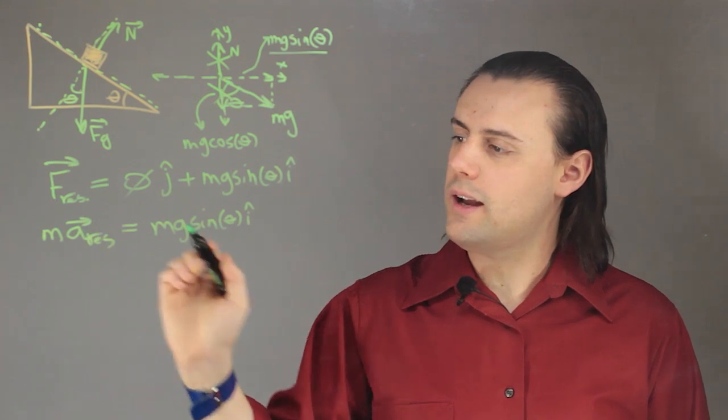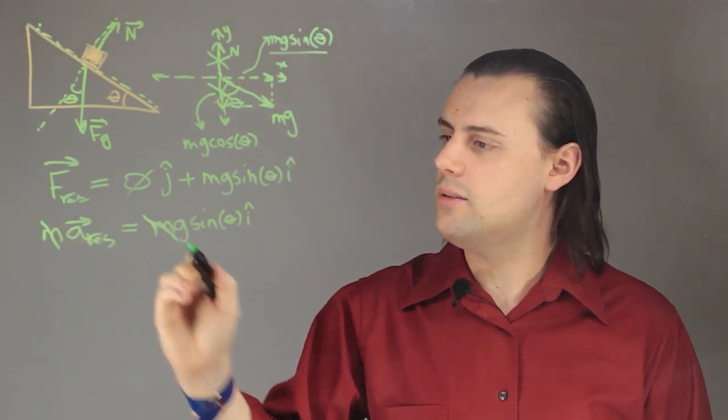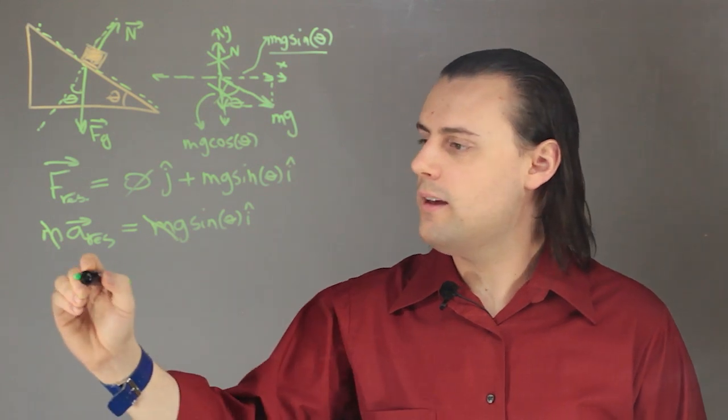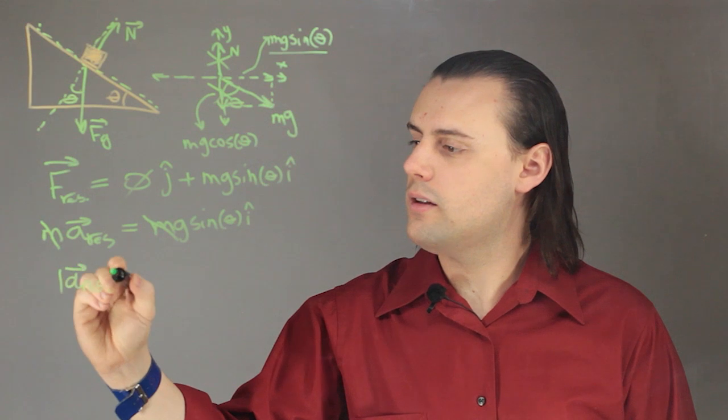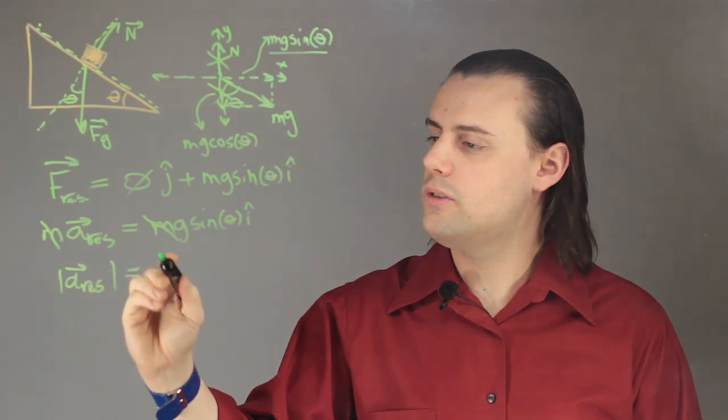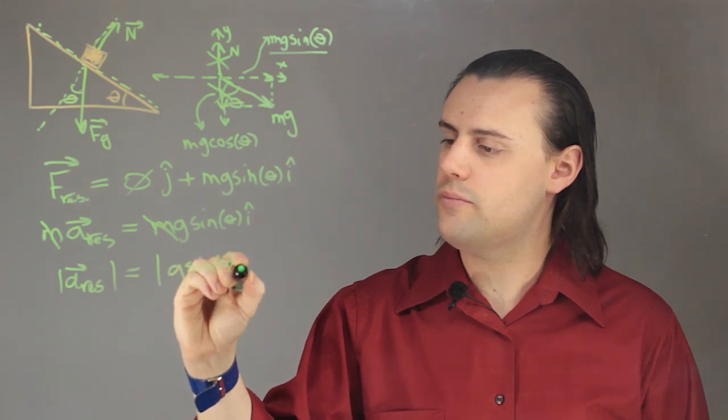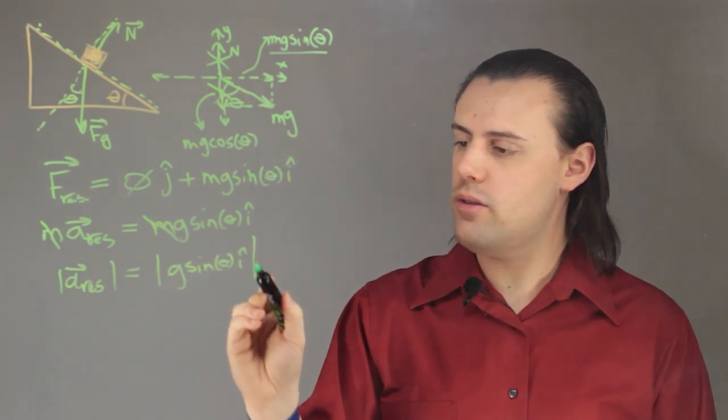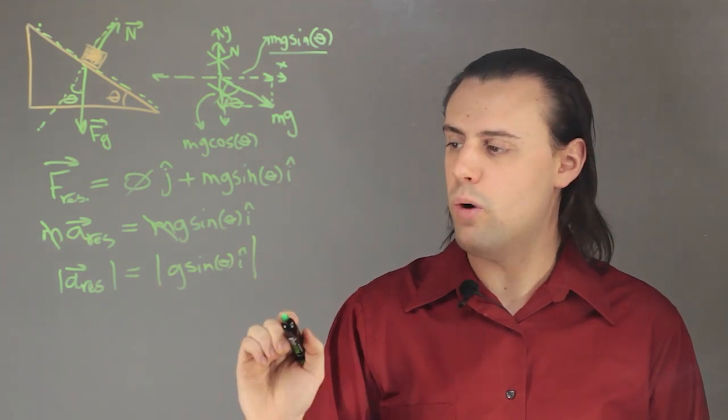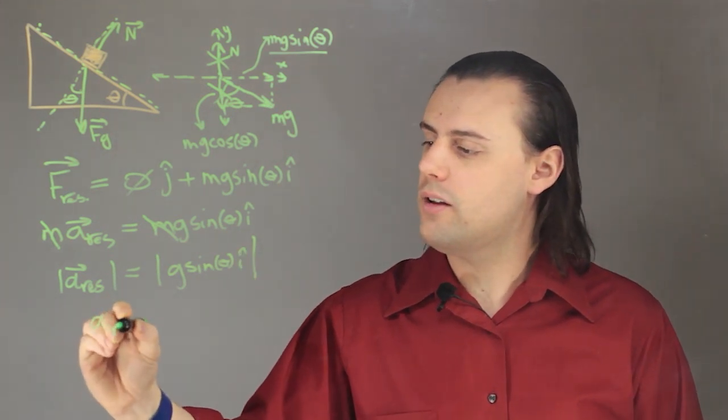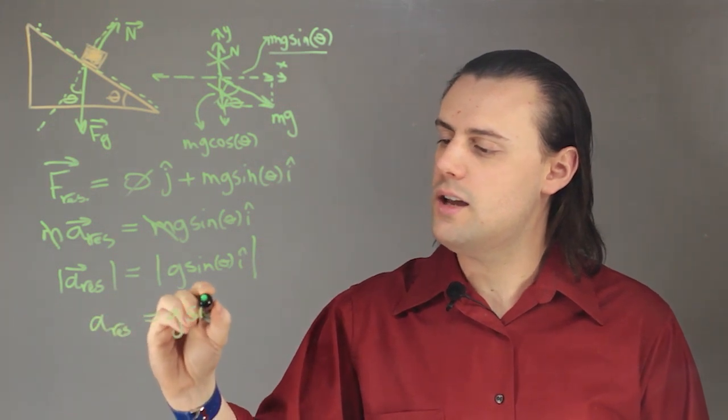And if I'm interested in the magnitude of this vector well first I can see that I can simply cancel out the masses. So the magnitude of the resultant vector is simply going to be equal to the magnitude of the right-hand side g sine theta i-hat. And I know that the magnitude of this unit vector is simply equal to one. So I have the resultant acceleration simply equal to g sine theta.